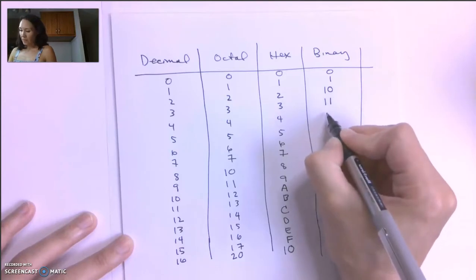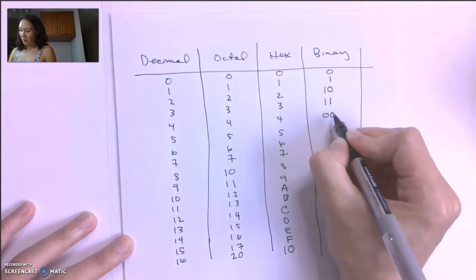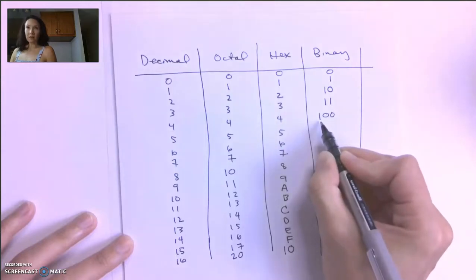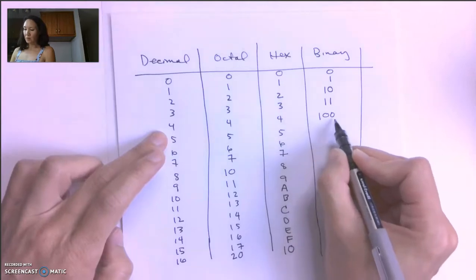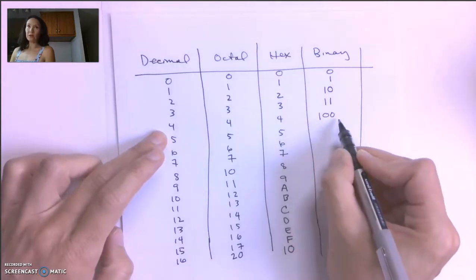So now we're going to reset these again to 0, 0. And now we shift to 1 over here. So 4 in decimal is 1, 0, 0 in binary. So it looks like 100.